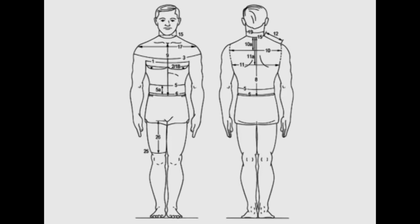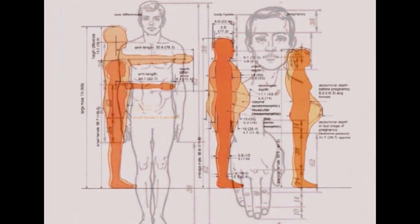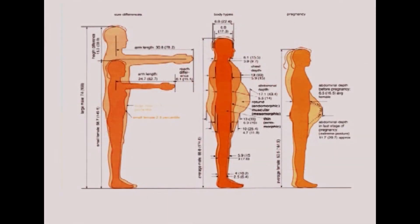Anthropometric measurements include measurements of height, weight, mid-upper arm circumference, head and chest circumference, BMI (body mass index), and also the waist-to-hip ratio. There can sometimes be inaccuracy in measurements if the measuring instrument used is not properly calibrated, so care should be taken that instruments are calibrated regularly in order to give accurate results.